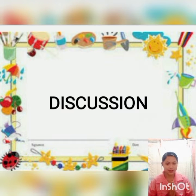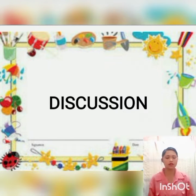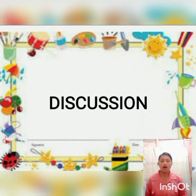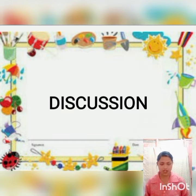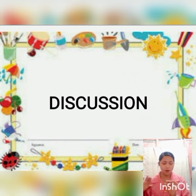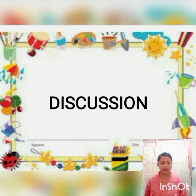I want you to group yourselves into two. Please count off from one to two. The first group will stay on the right side and the second group will stay on the left side. I will give each group puzzle pictures and scrambled words. All you have to do is arrange them, post the pictures on the board, and place the arranged words below the pictures. I will only give you five minutes to do your task.